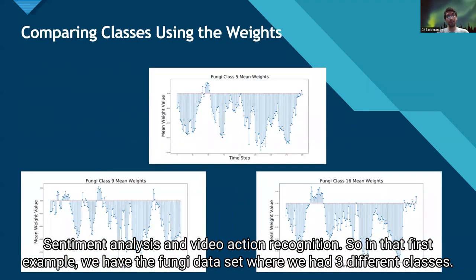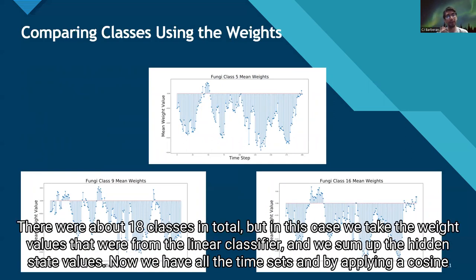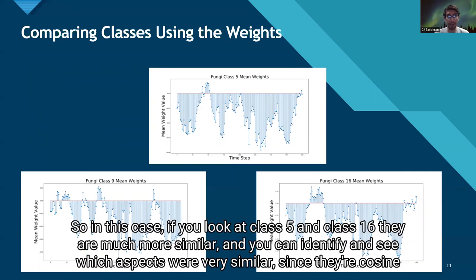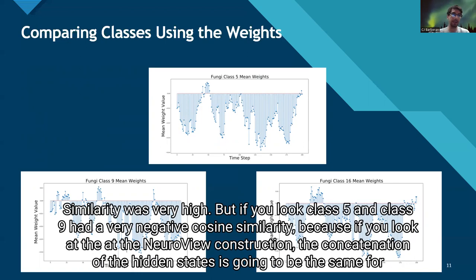In the first example, we have the fungi dataset with three different classes shown — about 18 classes in total. We take the weight values from the linear classifier and sum up the hidden state values across all time steps. By applying cosine similarity, we can assess which classes are very similar. For instance, class five and class 16 are much more similar, and you can identify which aspects look similar since their cosine similarity was very high.